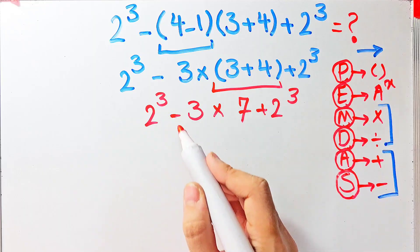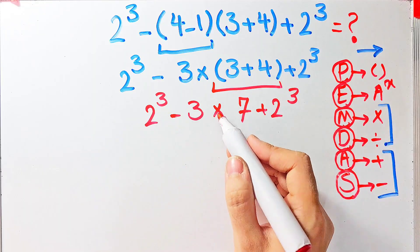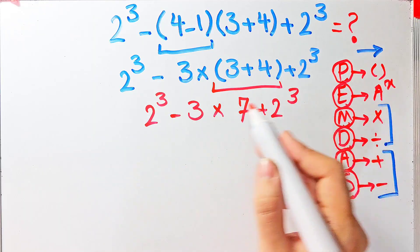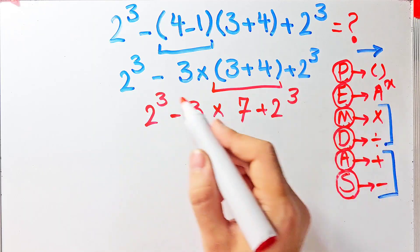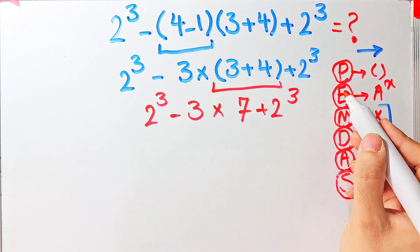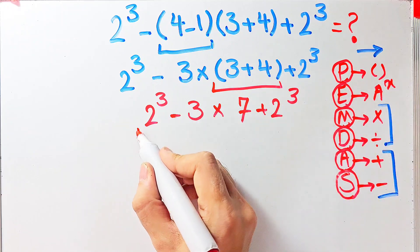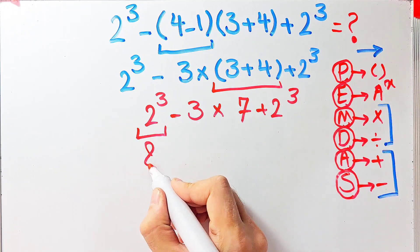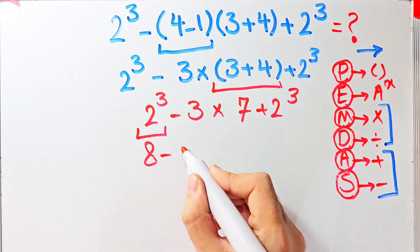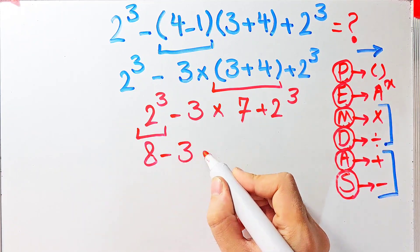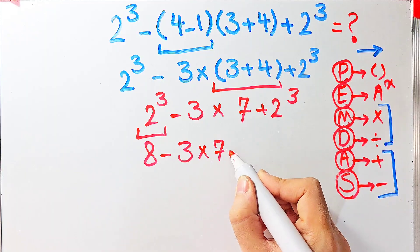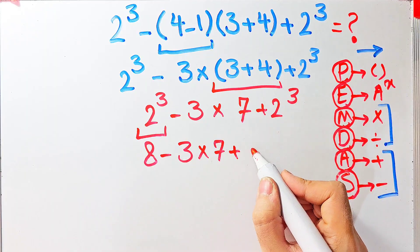In this step we simplify the exponents. 2 to the power of 3 equals 8. Now we have 8 minus 3, then times 7, then plus 2 to the power of 3, which also equals 8.